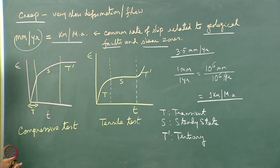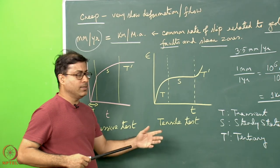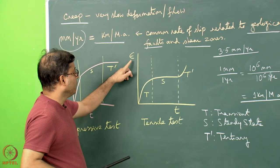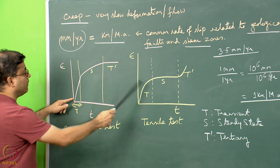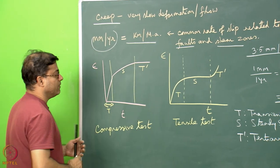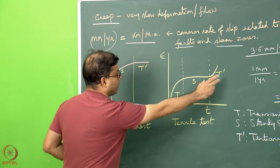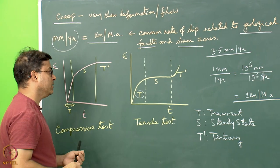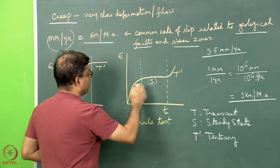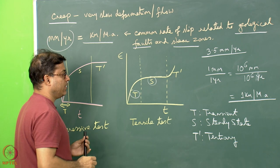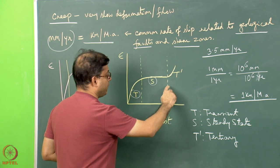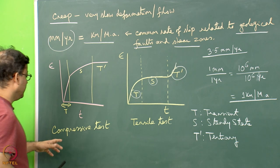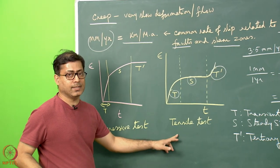In the tensile test, the material is pulled slowly over a long experiment. The curve can also be broken into three parts: transient creep, steady state (where the strain-time relationship is almost a straight line nearly parallel to the time axis), and tertiary creep where the curve moves upward. Compressive and tensile behavior of rocks can be drastically different.